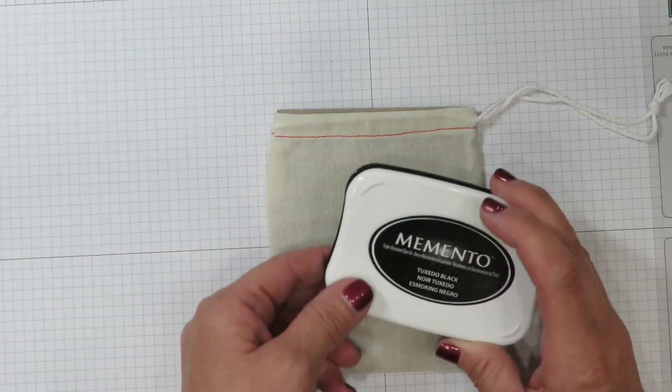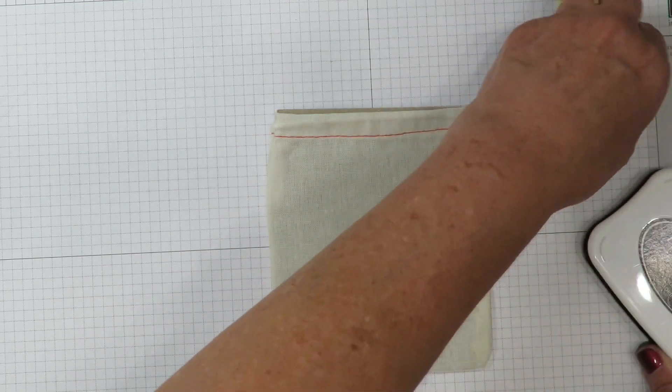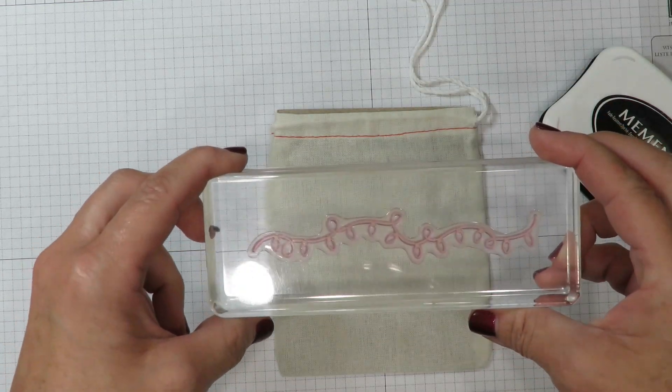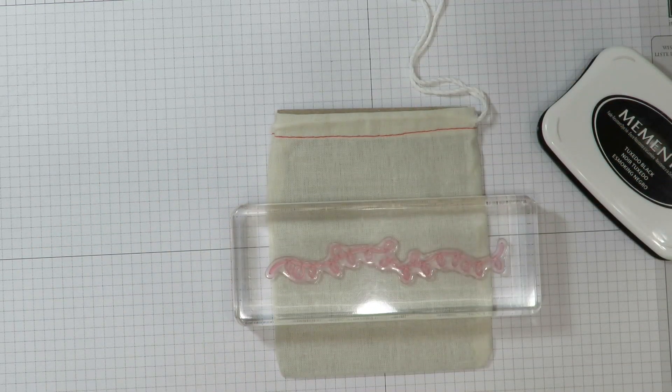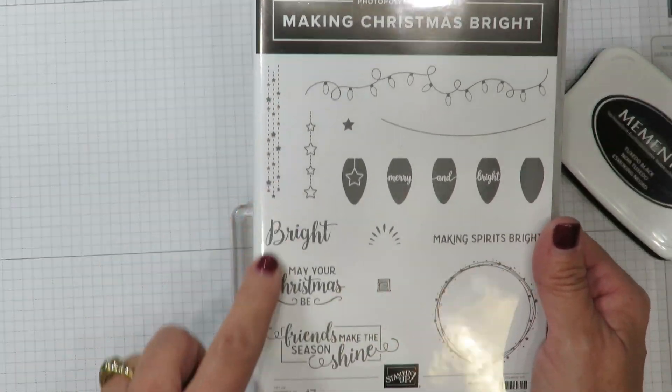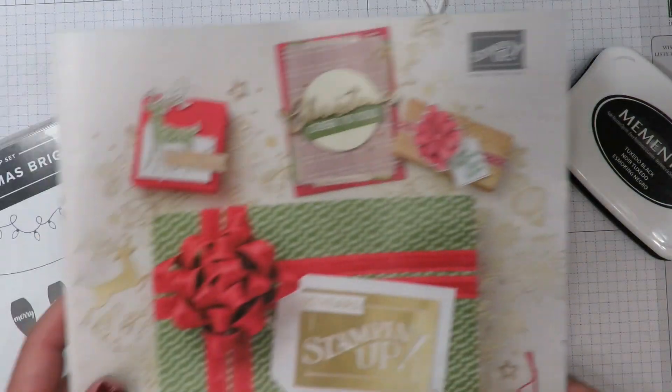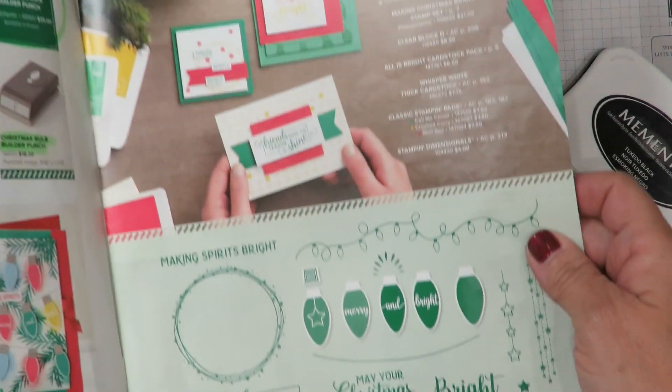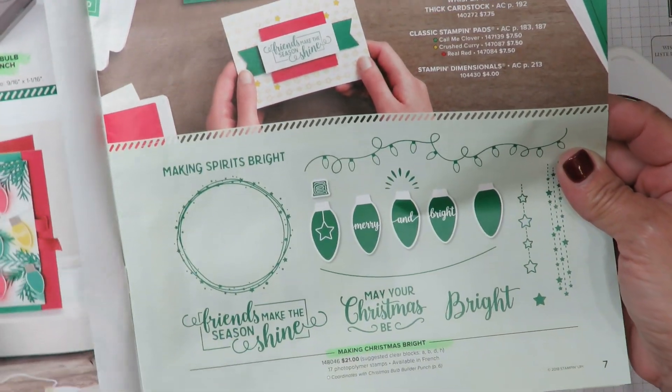I'm going to be stamping my images using Memento ink. I'm using this adorable string of Christmas lights and this comes from a holiday catalog product called Making Christmas Bright. You'll find this product in the holiday catalog. It's here on page seven.